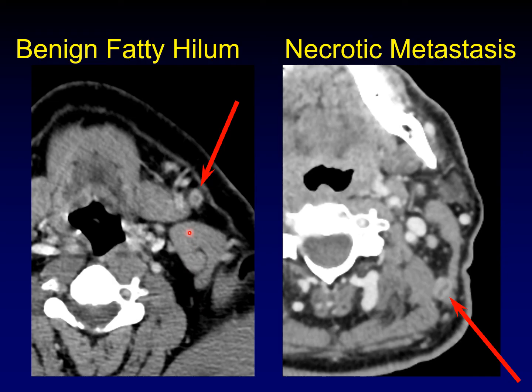So this is a classic error: to assume that a benign fatty hilum is, in fact, central necrosis. That's a benign lymph node. This one is true necrosis in a necrotic metastasis.